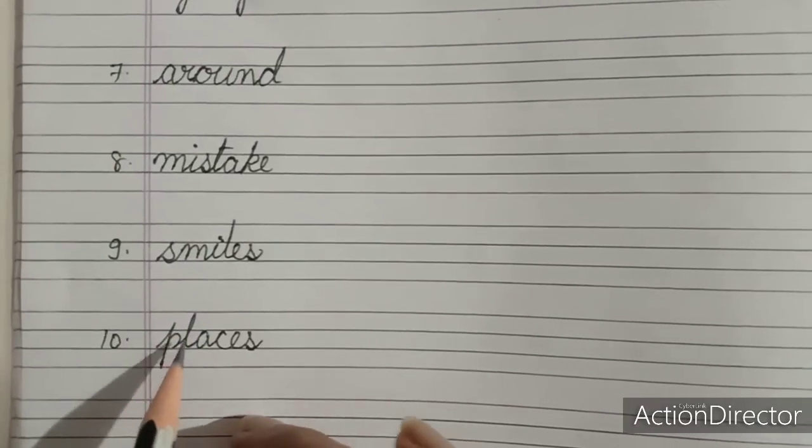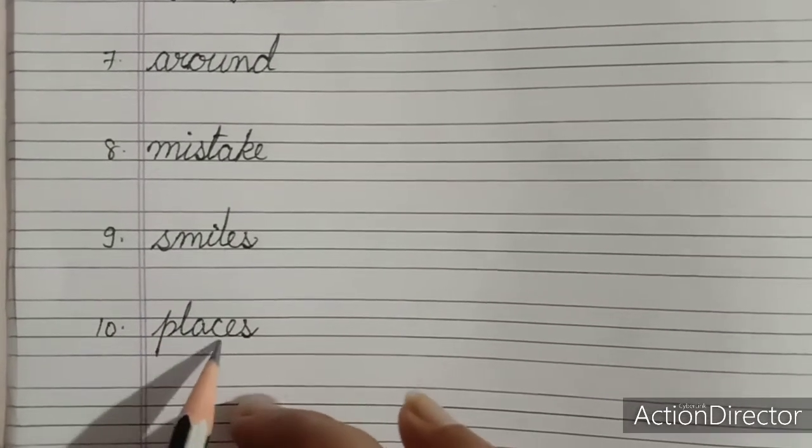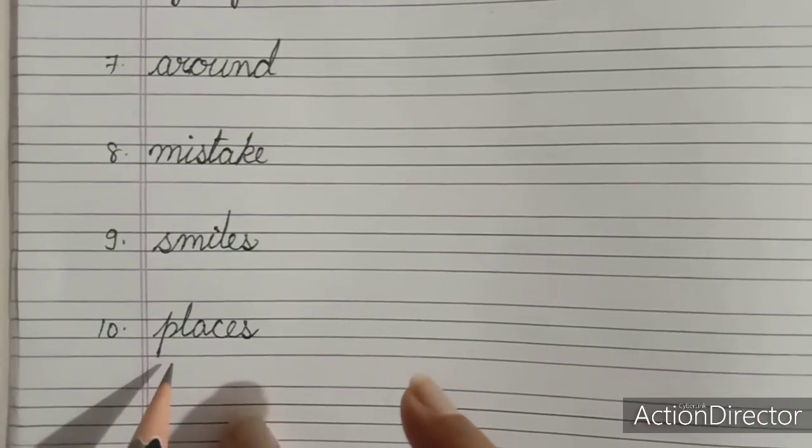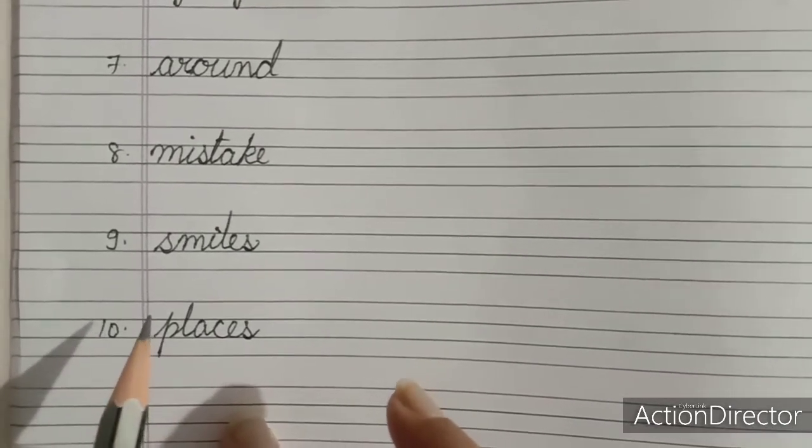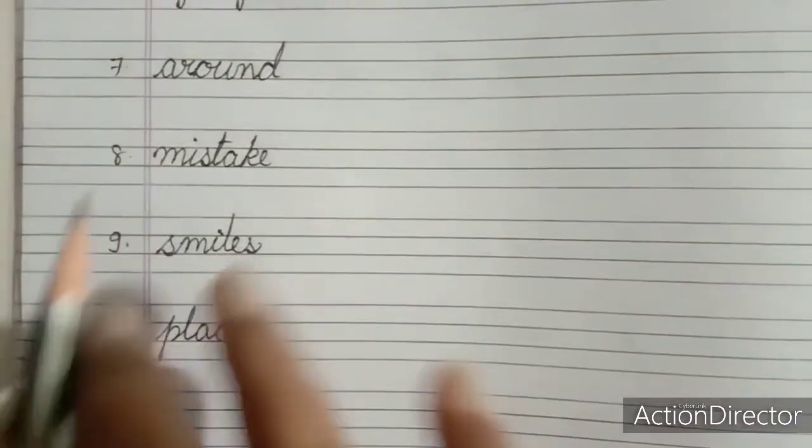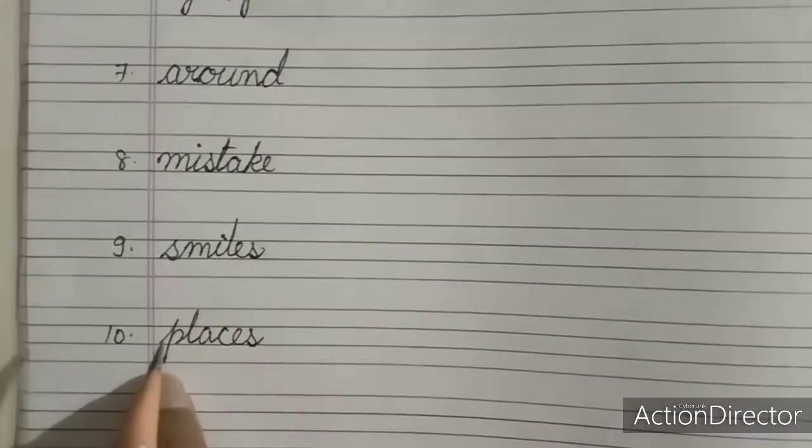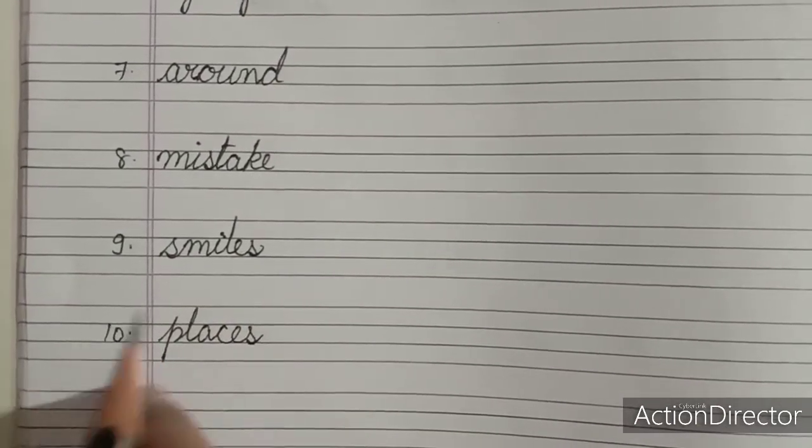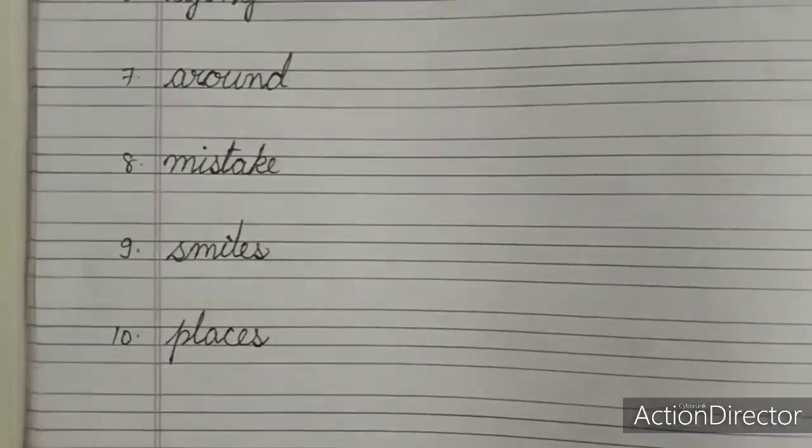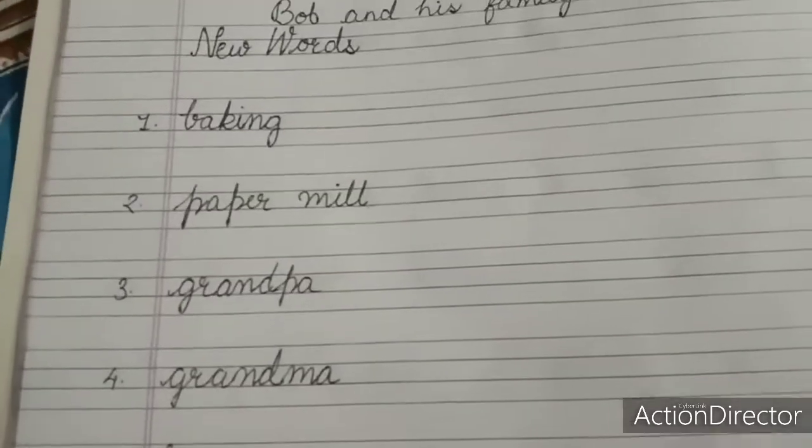Then tenth is places. P-L-A-C-E-S. Places. Places means place. The right place. Like grandmother told him keep it in right place, meaning keep your toys in the right place. So this was the ten difficult words for the lesson.